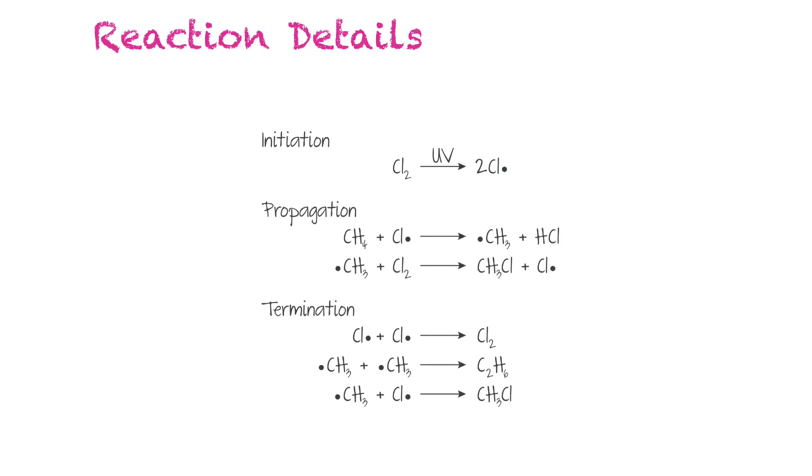So now we'll talk in detail about the reaction details that happen. So the first step is the initiation step. UV light will break apart the halogen. In this example, it's chlorine, making a free radical. So UV light splits apart a chlorine molecule and you have two chloride radicals.